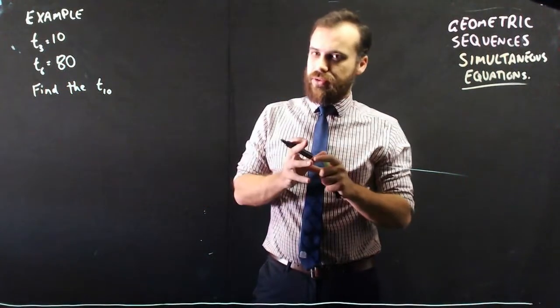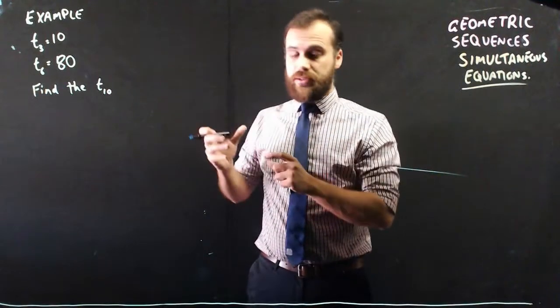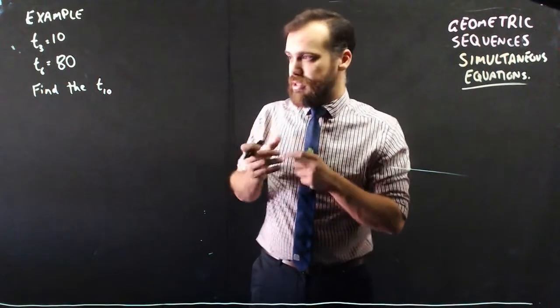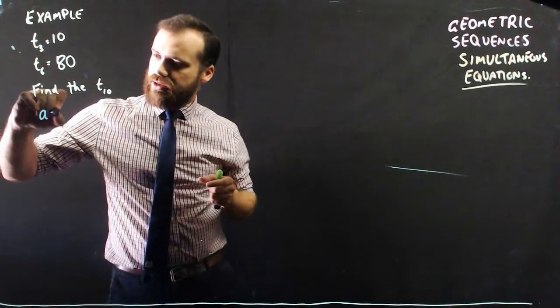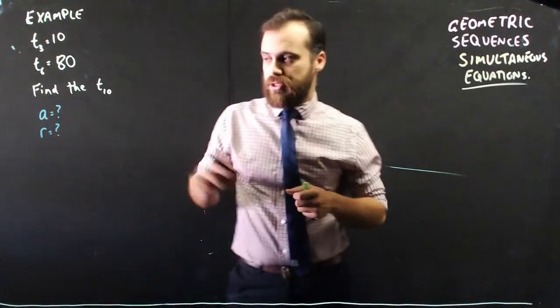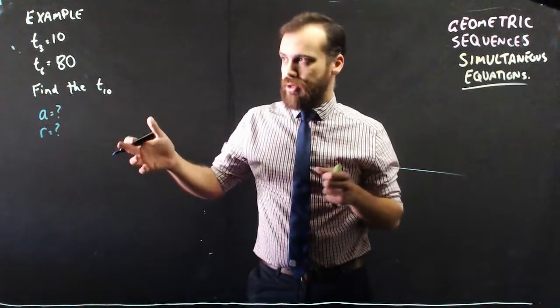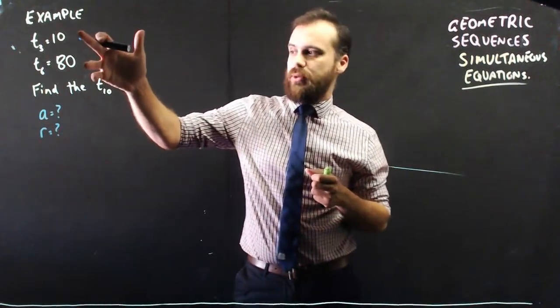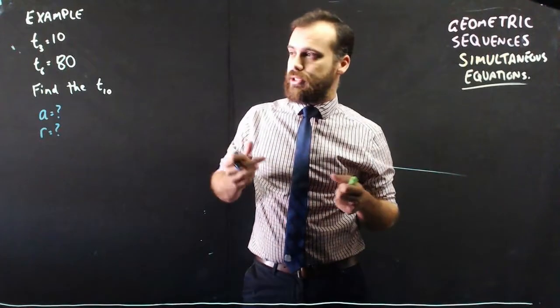In order to find the 10th term, we really need to be able to define the sequence, and the way to define the sequence is to find out what a is equal to and to find out what r is equal to. We've got two variables that we want to know, we've got two relationships that we know, so we should be able to solve it using simultaneous equations.